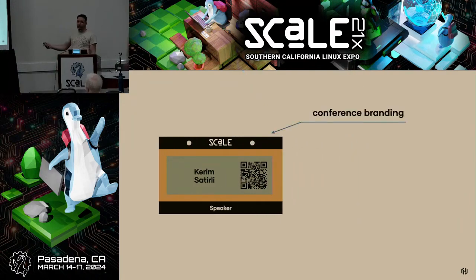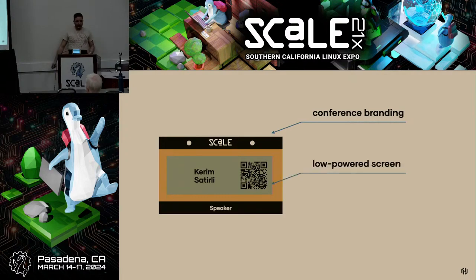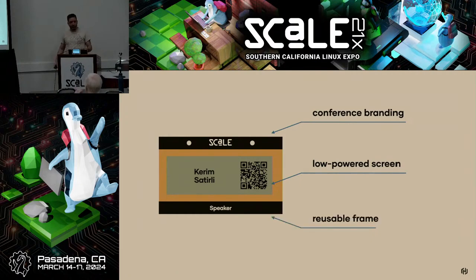We want to keep the conference branding, so we'll create this in a way that we can reuse across conferences. We don't want everything to be digital, because the more screens you add, the more power consumption you have. We'll make this a nice frame — some prototypes shipped and didn't break, some did ship and did break. We'll replace the heavy stock paper with a low-powered screen. We didn't go for full-color display, because carrying around a full-size battery pack is way less fun than a single battery. And a reusable frame with nice stickers you can remove and add.